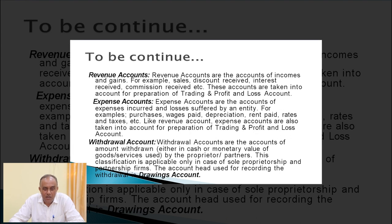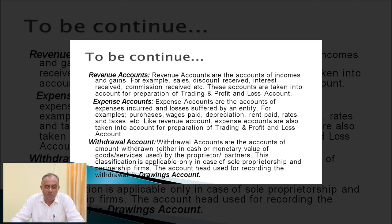Another is revenue. Revenue accounts are the accounts of incomes and gains — for example, sales, discount received, interest received, and commission received. Recurring nature of income is known as revenue. Expense accounts are the accounts of expenses incurred and losses suffered by the entity, which are of a regular recurring nature and are known as revenue expenses.